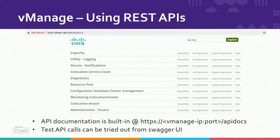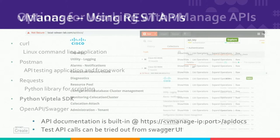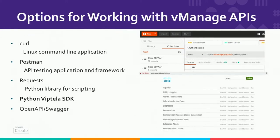A couple of other options to work with vManage APIs: for anyone starting out, Postman is the best place to learn about APIs so you can see how the request and response look for a specific API endpoint, and then use that within your automation scripts built with Python or any other language.